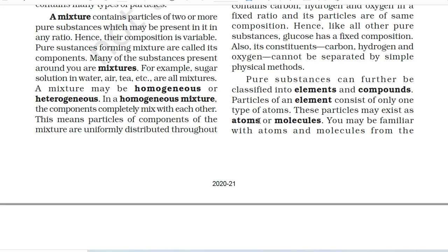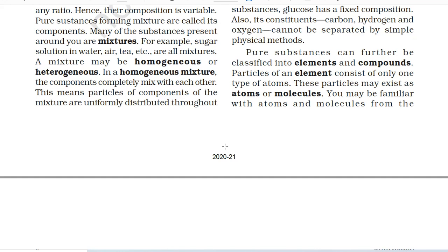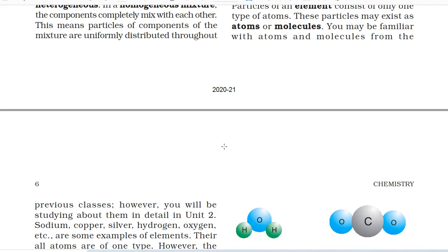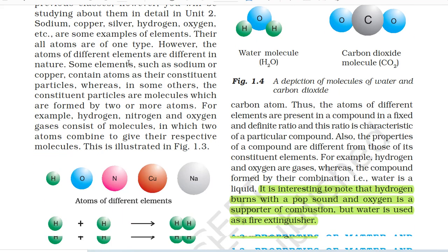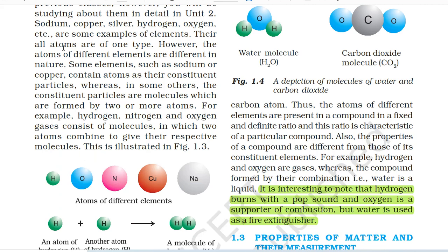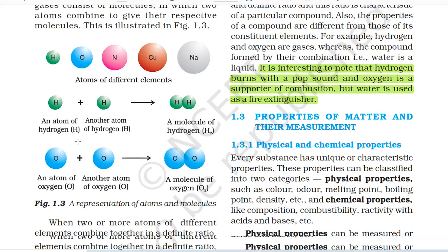Pure substances can further be classified into elements and compounds. Particles of an element consist of only one type of atoms. These particles may exist as atoms or molecules. Sodium, copper, silver, hydrogen, oxygen, etc. are some examples of elements. Their atoms are all of one type, however the atoms of different elements are different in nature. Some elements such as sodium or copper contain atoms as their constituent particles, whereas in some others the constituent particles are molecules formed by two or more atoms. For example, hydrogen, nitrogen and oxygen gases consist of molecules in which two atoms combine to give their respective molecules.